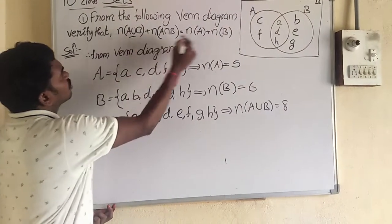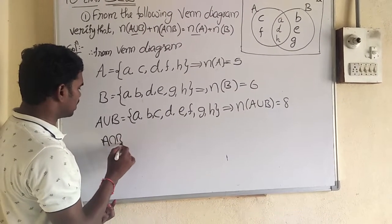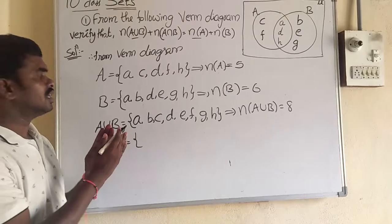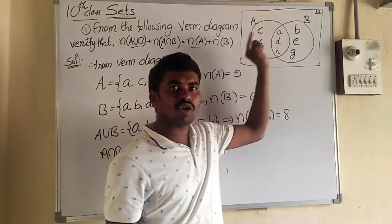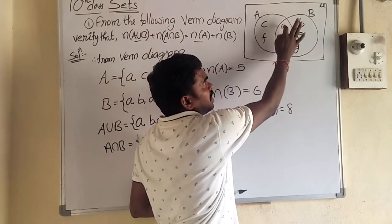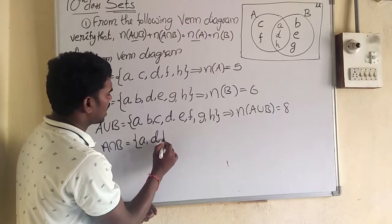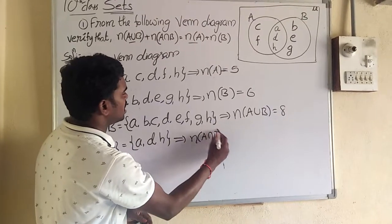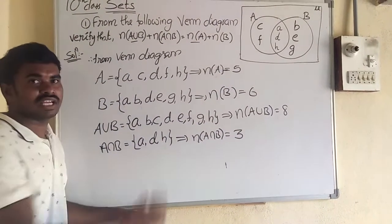Next, we want A intersection B also. A intersection B means common elements of A and B. What are the common elements? A, D, H are the common elements. So A intersection B equals {A, D, H}. That implies the number of elements in A intersection B is equal to 3.